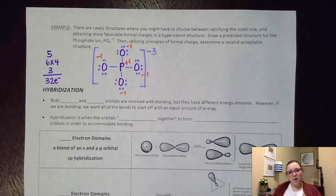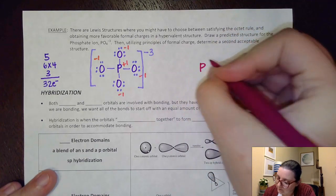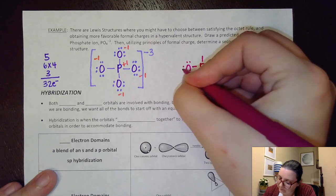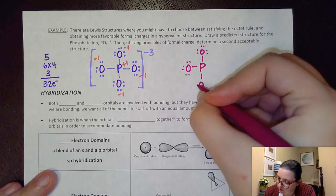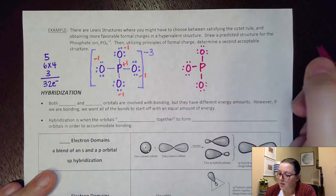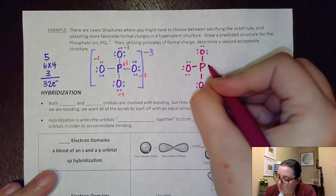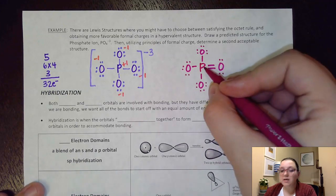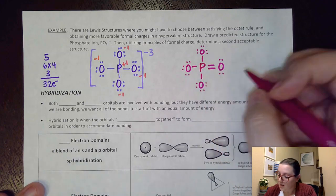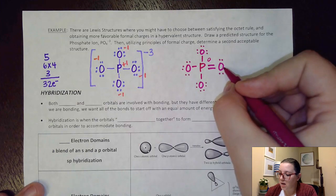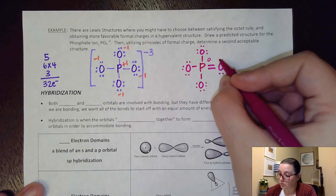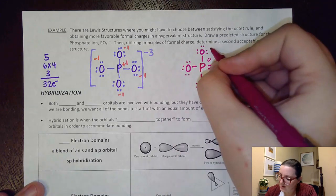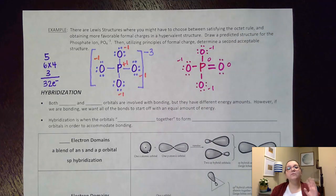If you look up the actual structure of PO₄³⁻, it doesn't look like the simple predicted structure. Instead, three oxygens stay the same, but one oxygen's lone pair is used to form a double bond with phosphorus — creating an expanded octet. Now phosphorus brings five and claims five — formal charge of zero. That double-bonded oxygen brings six and claims six — formal charge of zero. We've reduced the formal charge by creating an expanded octet on the phosphorus.